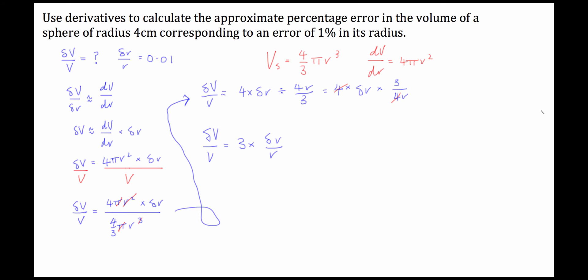Now we know what delta r over r is, they give it to us in the question. So what we can then do is we can go straight in and say well therefore delta v over v, or the percentage error in the volume, is going to be equal to 3 times 0.01, which is equal to 3 percent error.